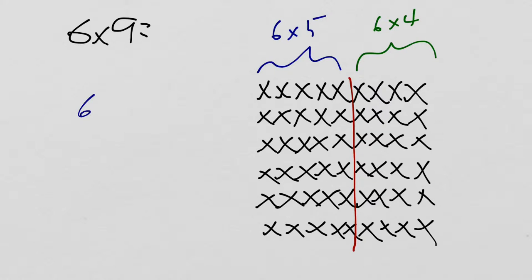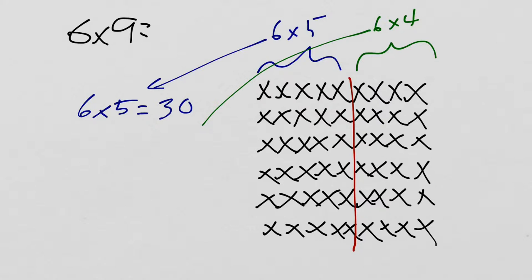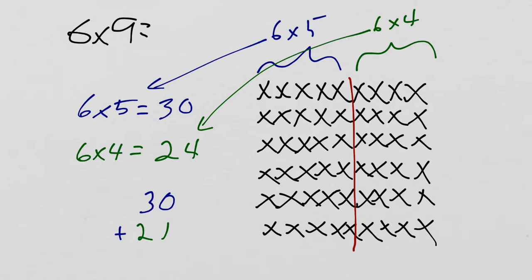This is going to make things easier because I can use those smaller, easier facts. 6 times 5 — that's an easy 5s fact — 6 times 5 equals 30. And 6 times 4, it's 1 six less; I can count by 6s or use any strategy I know, and it's 24. So this is now pretty easy because all I have to do is put those back together with addition: 30 plus 24. 0 plus 4 is 4, and 3 tens plus 2 tens is 5 tens, so it's 54.